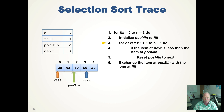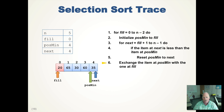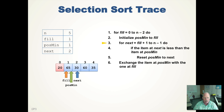We update next. Is 30 less than 60? Yes, so we don't do anything to posmin. Update next. Is 30 less than 20? No, so we update posmin. Now we've gone all the way to n minus one. So we exchange the item at posmin with the item at fill — we put 20 there and 35 at posmin. Now we've got the smallest item in the array at position zero. We update fill to find the next smallest thing, update posmin, and set next.